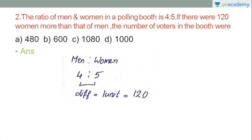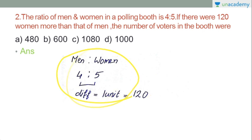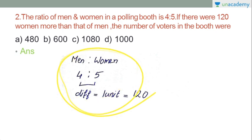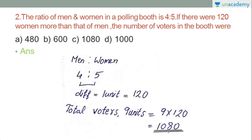The difference for one unit: the ratio is 4 is to 5, so the difference is 1 unit. One unit equals 120. Looking at 4 to 5, we get 4 units and 5 units giving 9 units total. So 9 times 120 will be the answer — 1080.